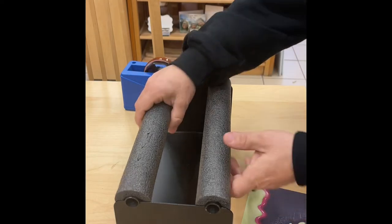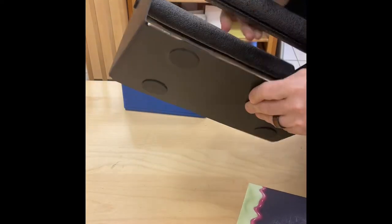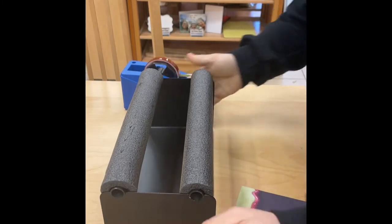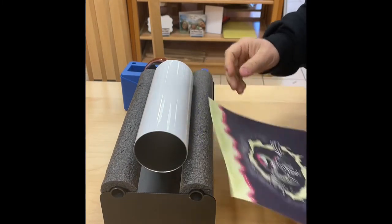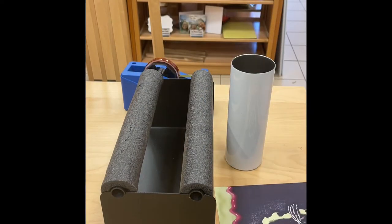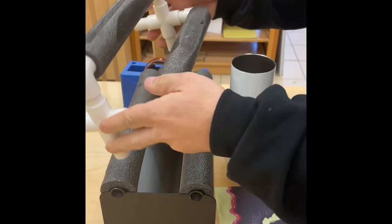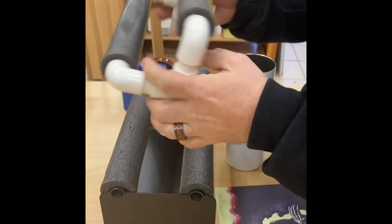All right, so this is our new tumbler cradle. Basically what this does is allows you to tape up a tumbler when you're adding your image to it. We had the old version, these plastic ones you can buy on Amazon. We used to make them as well.